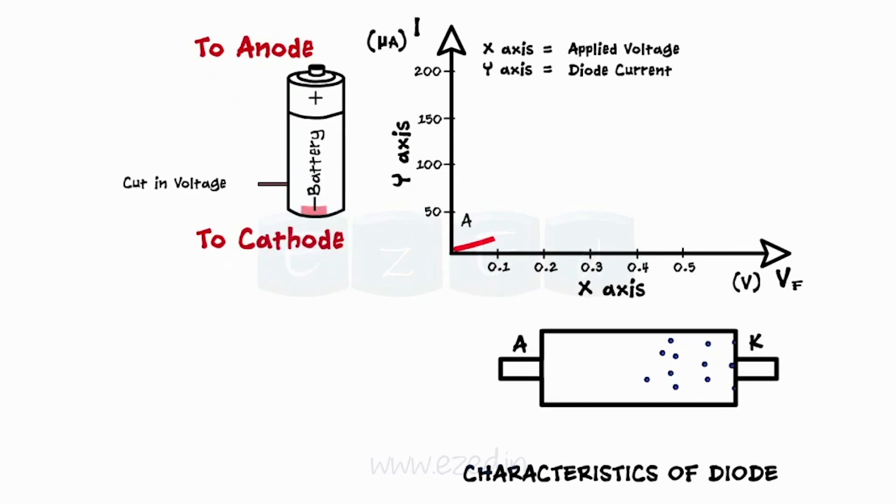When the diode is operated in forward bias mode, current flowing through the diode between points A and B remains at a low level. But as soon as the external voltage crosses the junction potential value or cut-in voltage, the flow of current rises from point B to point C. This graph is called the forward characteristics of a diode.